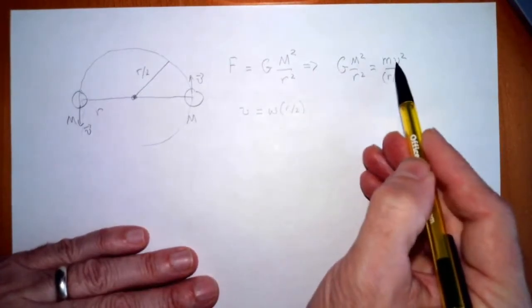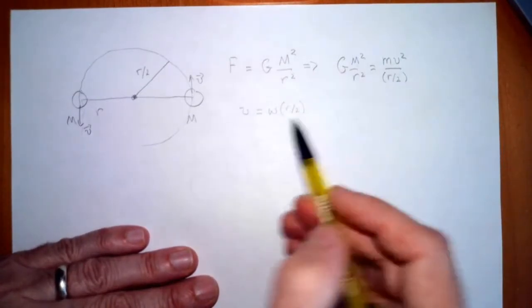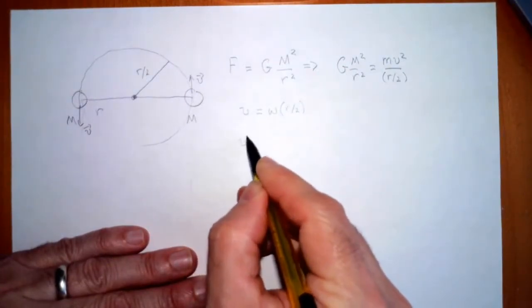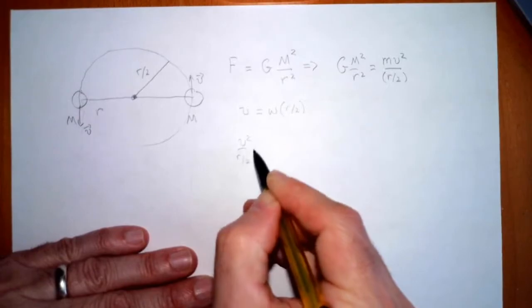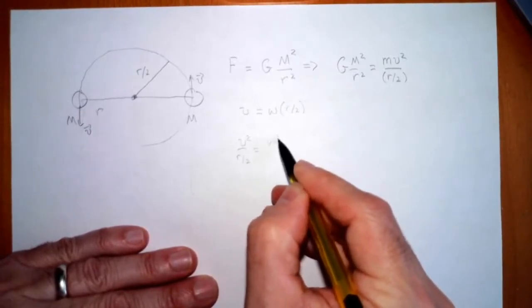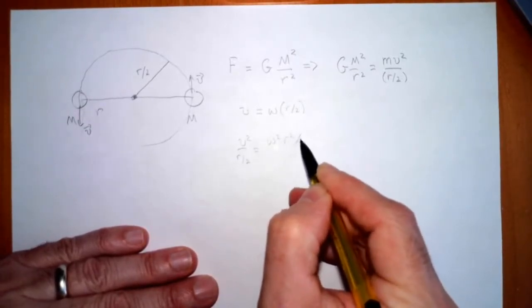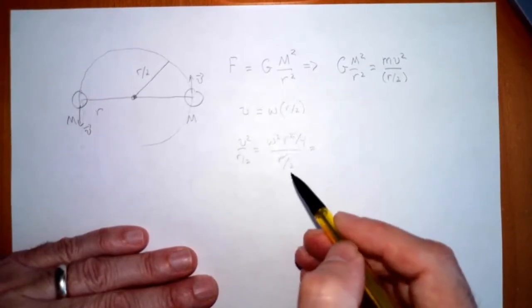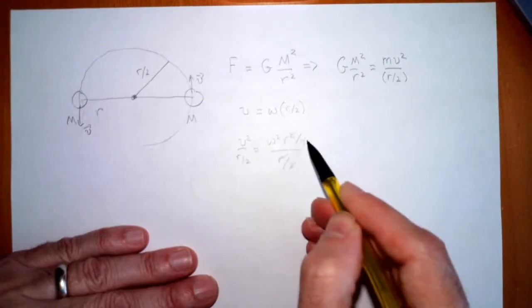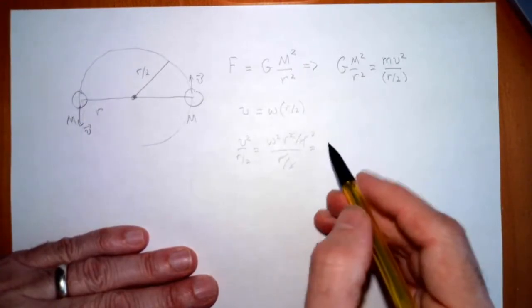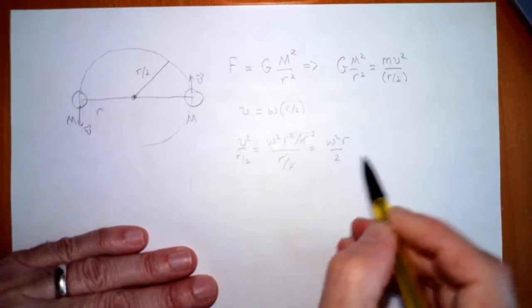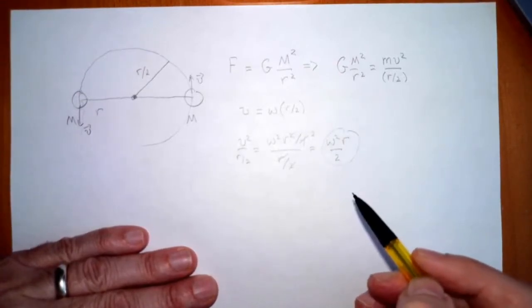But wait a minute, here I've got mv squared over r over 2, but v is omega r over 2. So if you write v squared divided by r over 2, that's omega squared r squared over 4 divided by r over 2. You can see one of these r's is going to cancel. This 2 is going to cancel one of the 2's in there, and that's going to leave you with omega squared times r over 2.